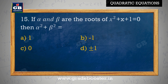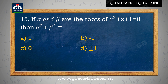If alpha and beta are the roots of x square plus x plus 1 equal to 0, then alpha square plus beta square equal to: A. 1, B. minus 1, C. 0, D. plus or minus 1.